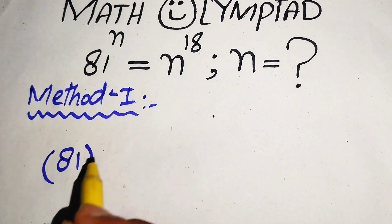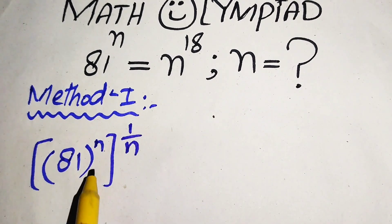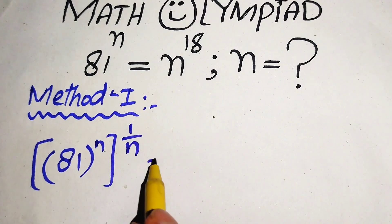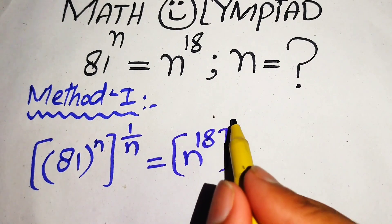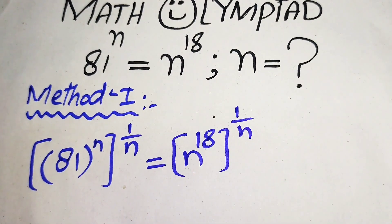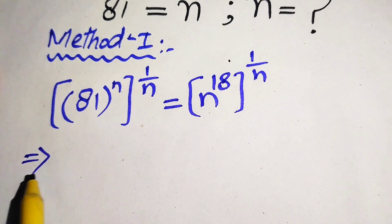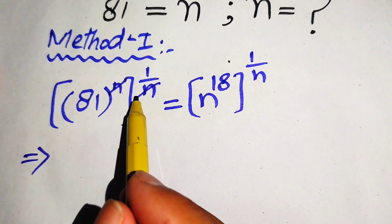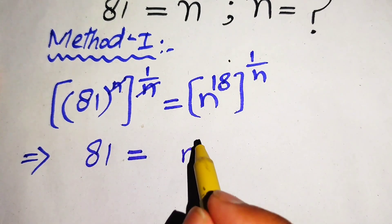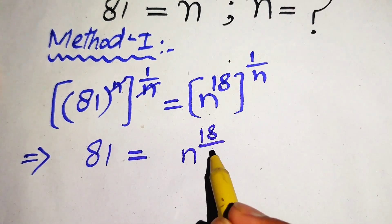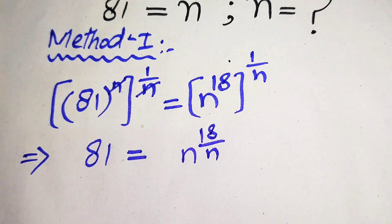When we take the nth root on both sides, we write the equation as 81 to the power of n, whole power 1 over n, and on the right hand side n to the power of 18, whole power 1 over n. Using the exponential law, the n's cancel out and we get 81 equals n to the power of 18 over n.